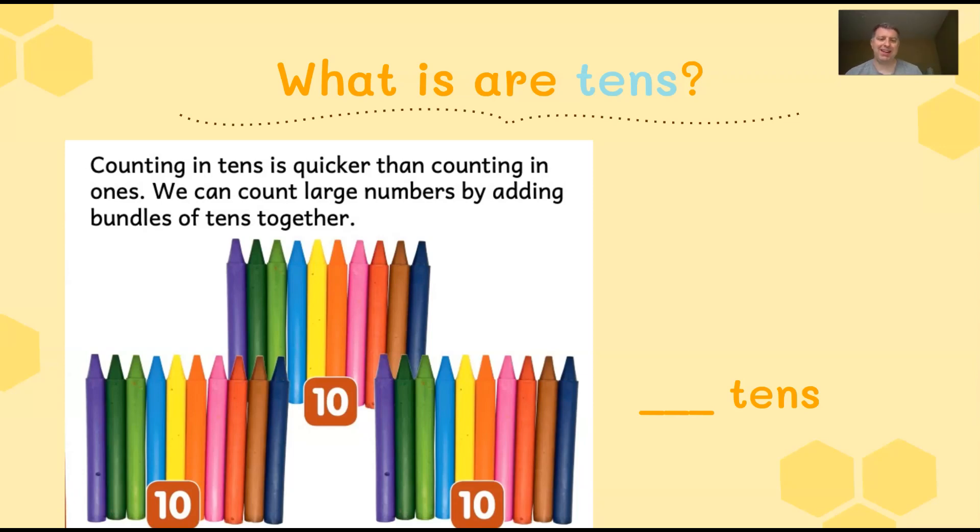So what are tens? Tens are a group of ten and we refer to more than one group of ten as tens. Counting in tens is quicker than counting in ones. Counting one, two, three, four, five. Counting by tens is a quicker way to count lots of objects. We can get large numbers by adding the bundles of tens together. So I have some crayons here. How many groups of tens do we have in crayons, friends? Here's one, two, three. That's three tens. We also refer to that number as 30, but today we're just going to count how many groups of ten. And we have three bundles of ten crayons or three tens of crayons.